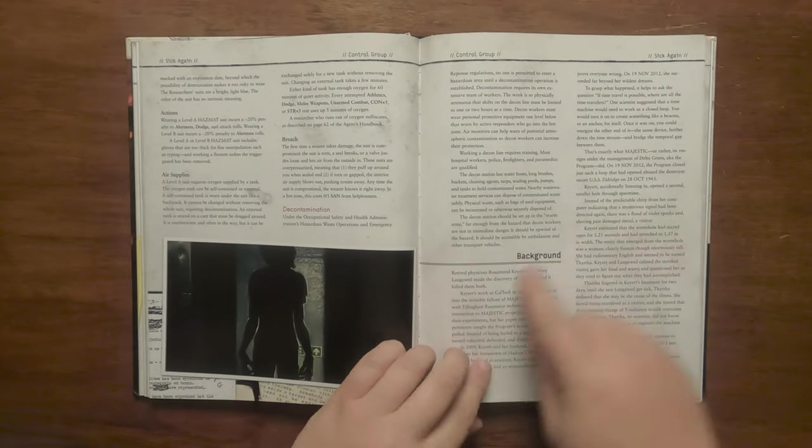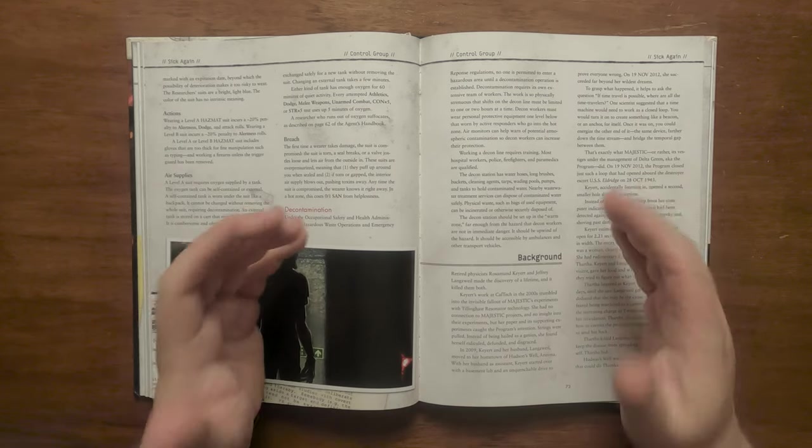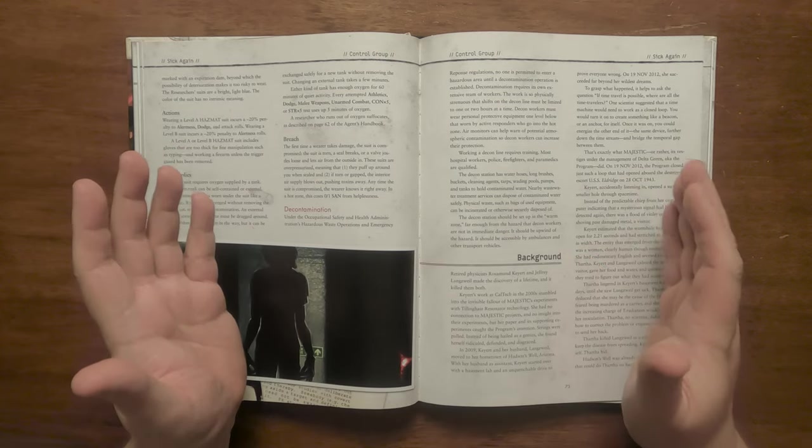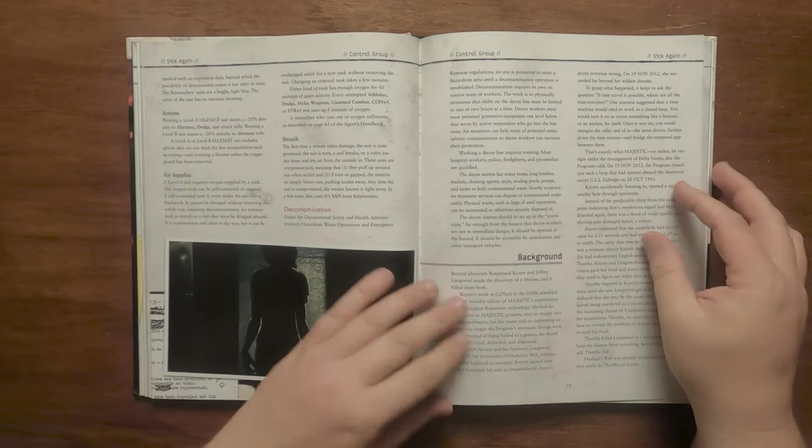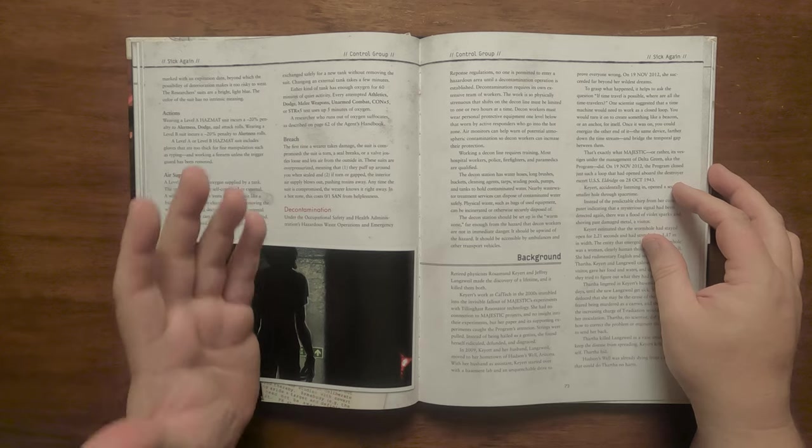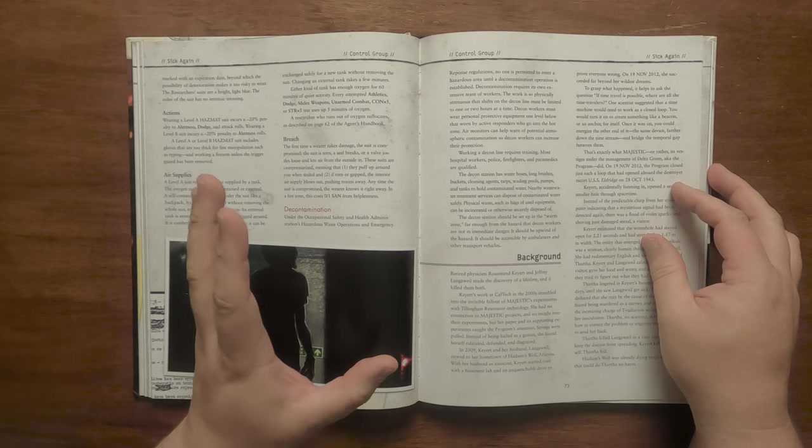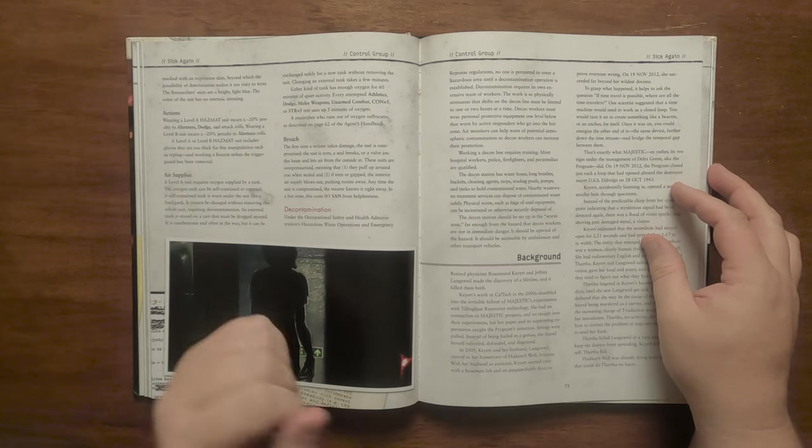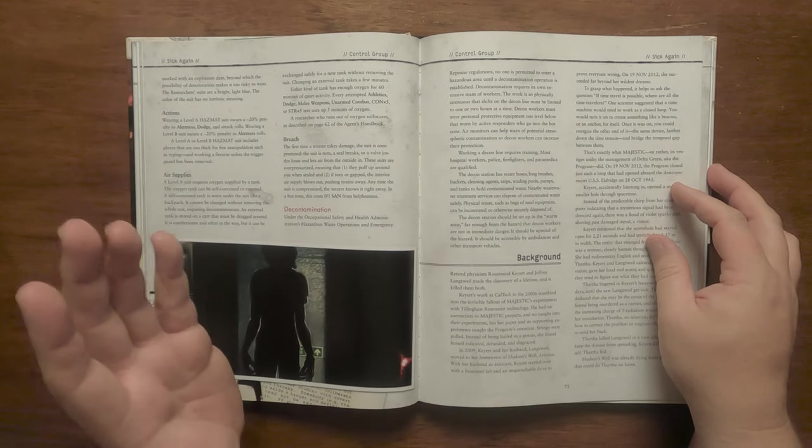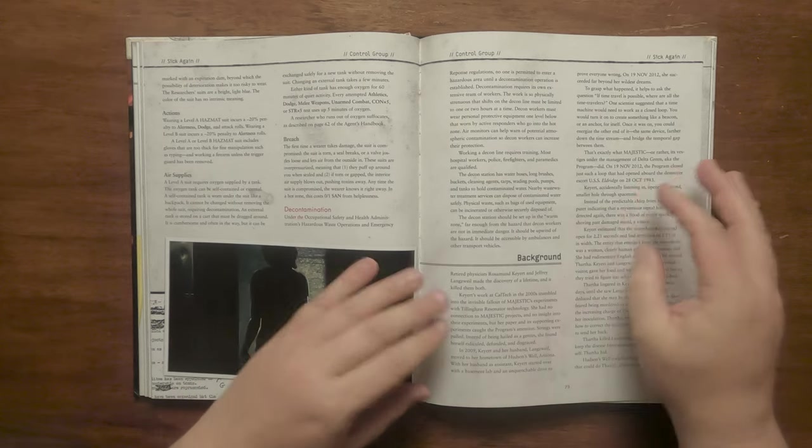The whole incident at Hudson's Well was started by two retired physicists, Rosamund Kyert and Geoffrey Langsville who made an incredible discovery that ultimately killed them. Kyert's work bled into the fallout of Majestic 12's experiments with the Tilling gas resonator though she had no connections with the group. Her intelligence and evidence caught the eye of the program and strings were pulled to defund and disgrace her. In 2009 she along with her husband Geoffrey moved to Hudson's Well Arizona, her hometown. She set up a basement lab with her husband as an assistant and on the 19th November 2012 they made an incredible breakthrough.